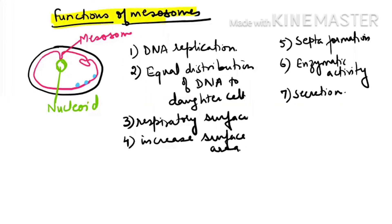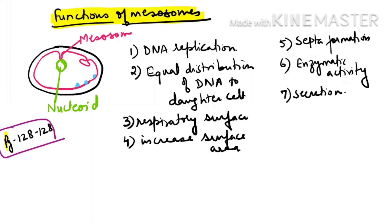All these functions of mesosomes are given in your cell chapter on pages 128 and 129 of your 11th class NCERT. All seven functions of mesosomes are very important from the exam point of view.